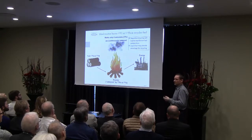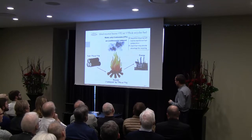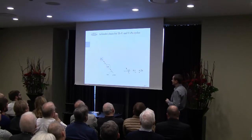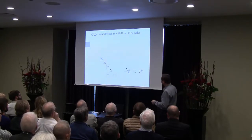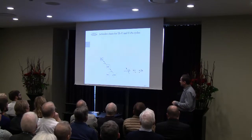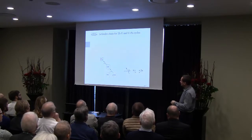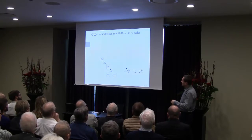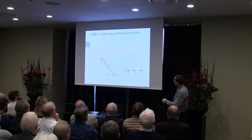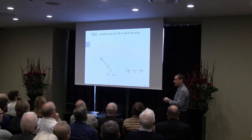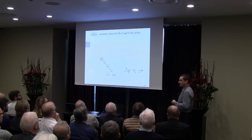If you recycle the fuel, it will eventually establish an equilibrium closed fuel cycle composition. Let's look at what happens if you irradiate thorium in a reactor: thorium captures a neutron, becoming thorium-233, then two beta decays create uranium-233. There are two numbers shown — light blue for thermal reactor and dark blue for fast reactor, normalized to thorium. Uranium-233 fissions, but there is roughly a 10% chance it will fail to fission and instead capture the neutron, creating uranium-234.